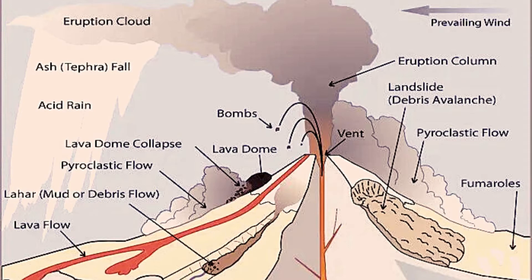Tephra: if magma is thick and sticky, gases cannot escape easily. Pressure builds up until the gases escape violently and explode. This type of eruption blasts magma up into the air, breaking it apart into pieces called tephra. Tephra can range in size from tiny particles of ash to house-size boulders. Tephra destroys everything in its path.